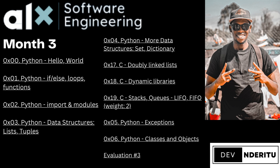Sprint one is purely C — no Python. I've been getting a lot of people asking why we start with C and not Python or JavaScript. Those are things you'll unlock as you move deeper into the program. Sprint two is where Python comes in. And if you thought C was difficult, wait until you start implementing algorithms in C — the difficulty level increases as you go deeper, but that's not to say it's not doable.